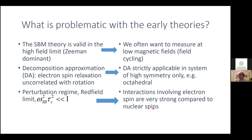The third problem is the validity of the perturbation regime — we call it also the Redfield limit, after the work of Redfield on this problem. The assumption is that the product of the interaction strength and the correlation time squared must be much less than unity. This is usually fine when we talk about nuclear spin relaxation, but electron spin relaxation is more problematic because the electron spin interactions are so strong. So we need a theory that takes care of all these problems.